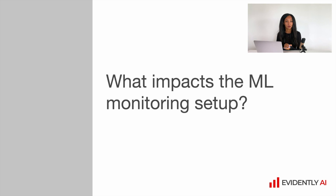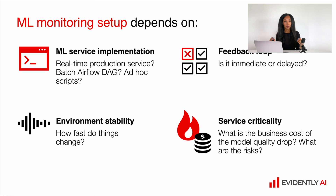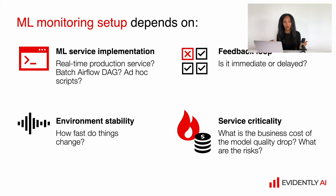So what impacts the machine learning monitoring setup? One of the most important factors is machine learning service implementation. There are many different ways you can deploy your machine learning model in production — it can be a real-time production service operating under a high load, a batch Airflow DAG, or even an ad hoc Python script run from a Jupyter notebook for a marketing campaign. It makes sense to match the complexity of monitoring with the complexity of your machine learning production service.